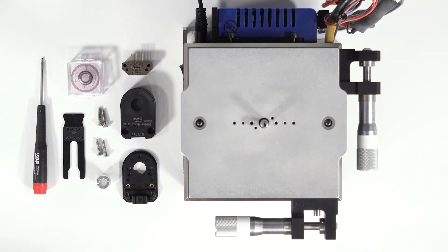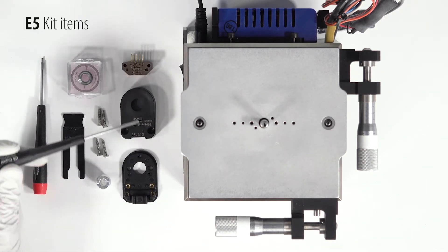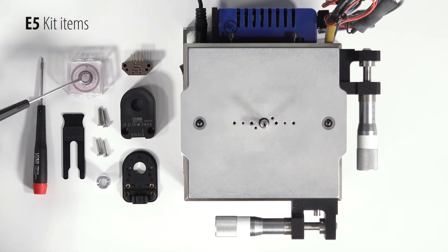Your E5 kit will include an encoder base, a cover, a module, a hub disk assembly, screws to mount the module and screws to mount the cover, as well as a centering tool, a spacer tool, and a hex tool.